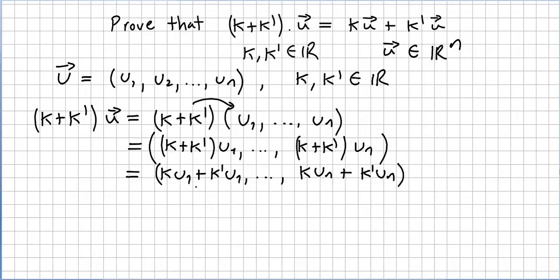This is the same as k·u1 + k'·u1, because we can distribute the scalars across each component: k·u2 + k'·u2, and so on until k·un + k'·un.